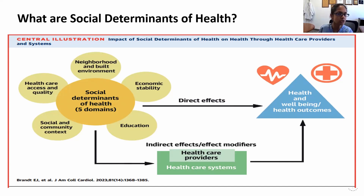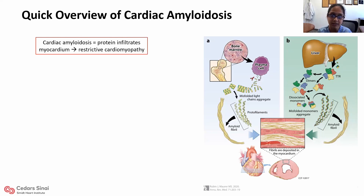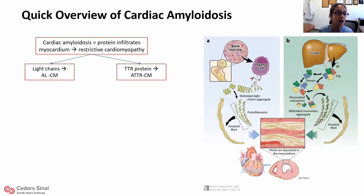Let's start with a quick overview of cardiac amyloidosis. It is a condition whereby a protein infiltrates the myocardium, resulting in a restrictive cardiomyopathy. The two most common sources of the protein are light chains — that would be AL cardiomyopathy — or the TTR protein, transthyretin cardiomyopathy.